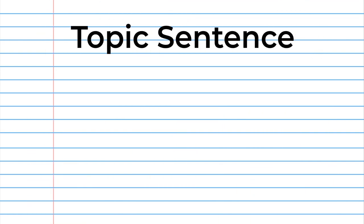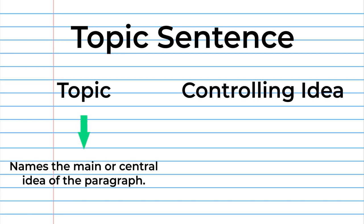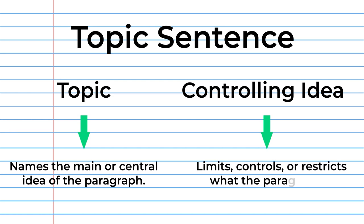The topic sentence is the first sentence in your paragraph. It contains the topic and controlling idea. The topic names the main or central idea of the paragraph. The controlling idea limits, controls, or restricts what the paragraph is going to say. Overall, the topic sentence focuses the information written about the topic in the paragraph so that it has unity.